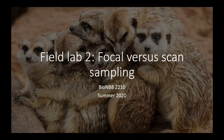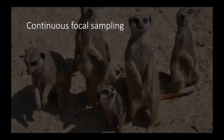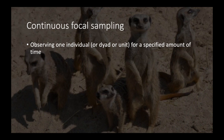For this short video I'm going to give you an introduction to the two different types of behavioral sampling that researchers do when they are studying animal behavior. The first we're going to cover is called continuous focal sampling. In this scenario we observe one individual or dyad for a specified amount of time.